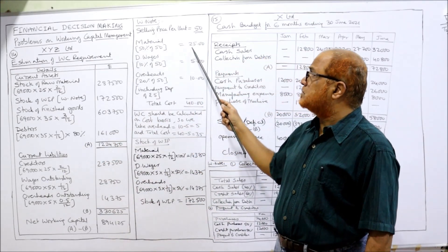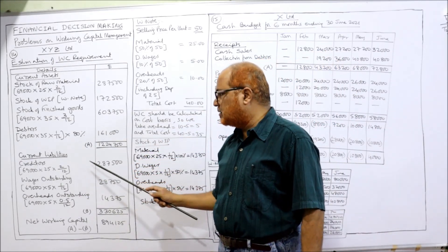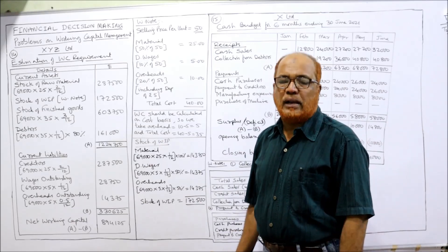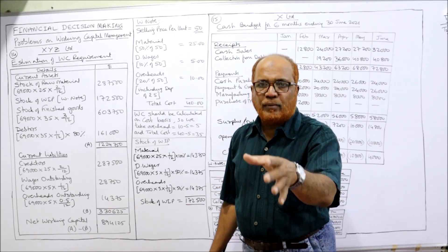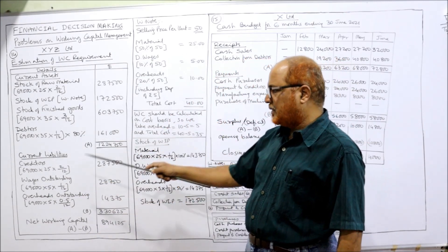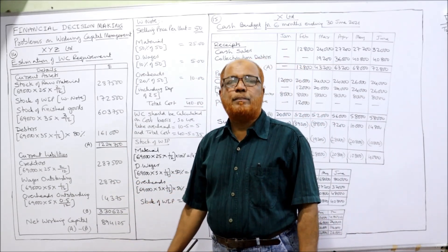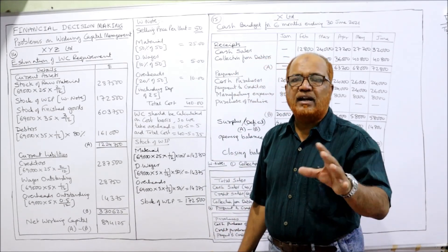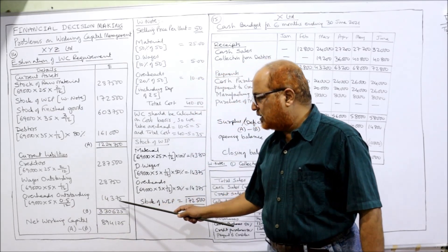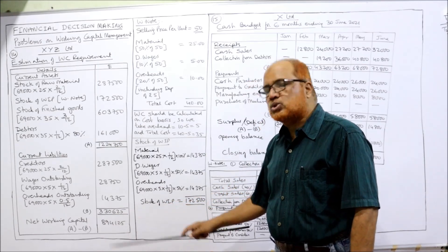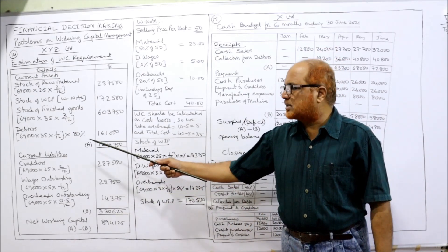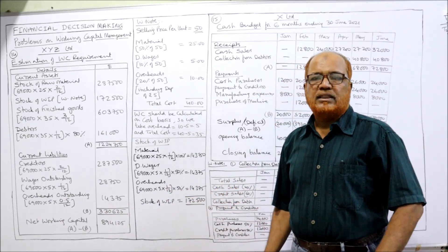Now current liabilities. Creditors: 69,000 units into 25 rupees material cost into 2 by 12 — two months credit period. Wages outstanding: wages are paid one month after accrual — January's wages paid in February — so 69,000 into 5 rupees into 1 by 12 equals 28,750. Overheads outstanding: paid 15 days after due date — half month — so 69,000 into 5 rupees into 0.5 by 12 equals 14,375. Total current liabilities come to 3 lakh 30 thousand 625. Net working capital (CA minus CL) equals 8 lakh 94 thousand 125.